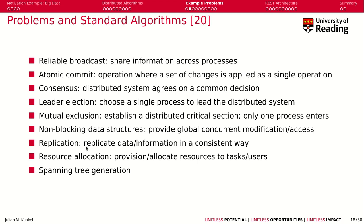Replication means you want to make sure that some data or information is replicated in a consistent way so that everyone has the same data at the end. You also want resource allocation — providing or allocating resources to different tasks and users. And lastly, spanning tree generation means having one effective way to communicate between all the peers without cycles.